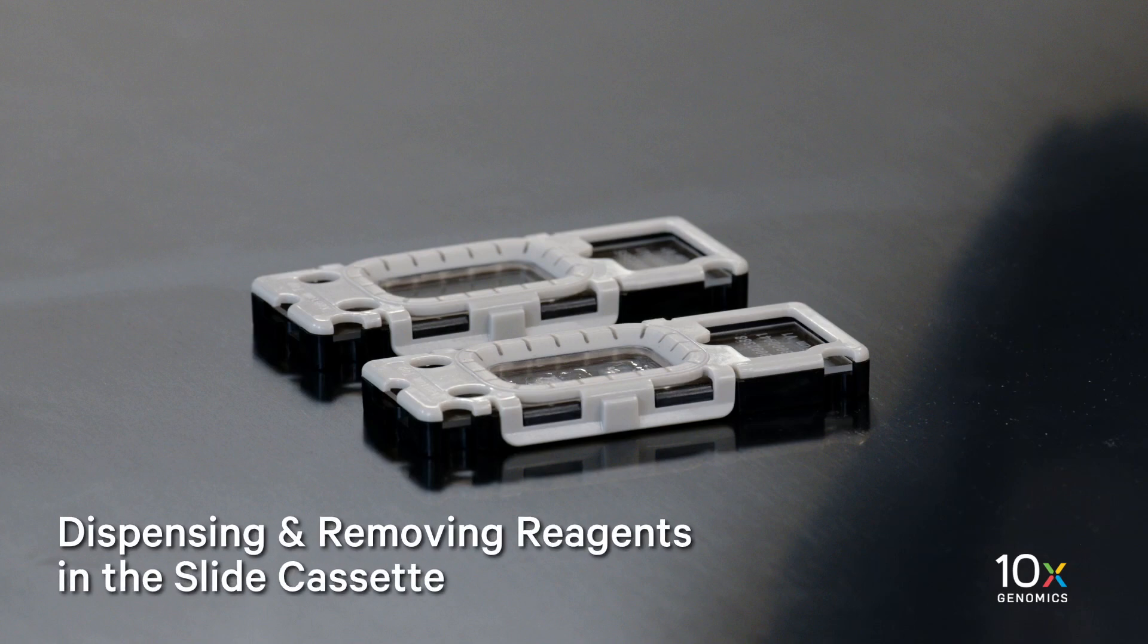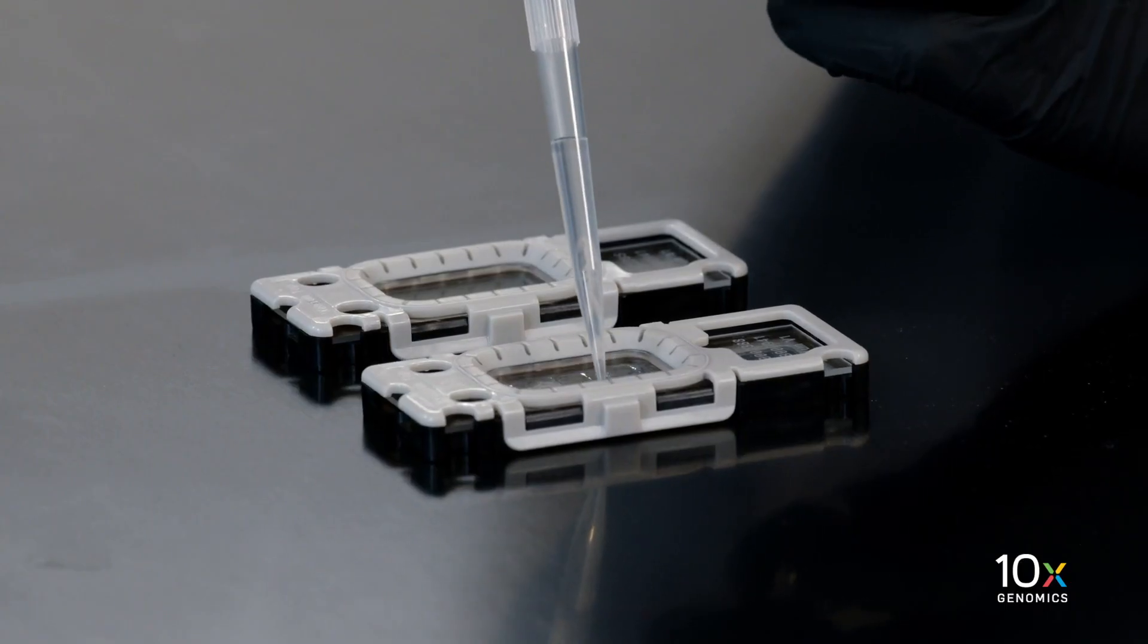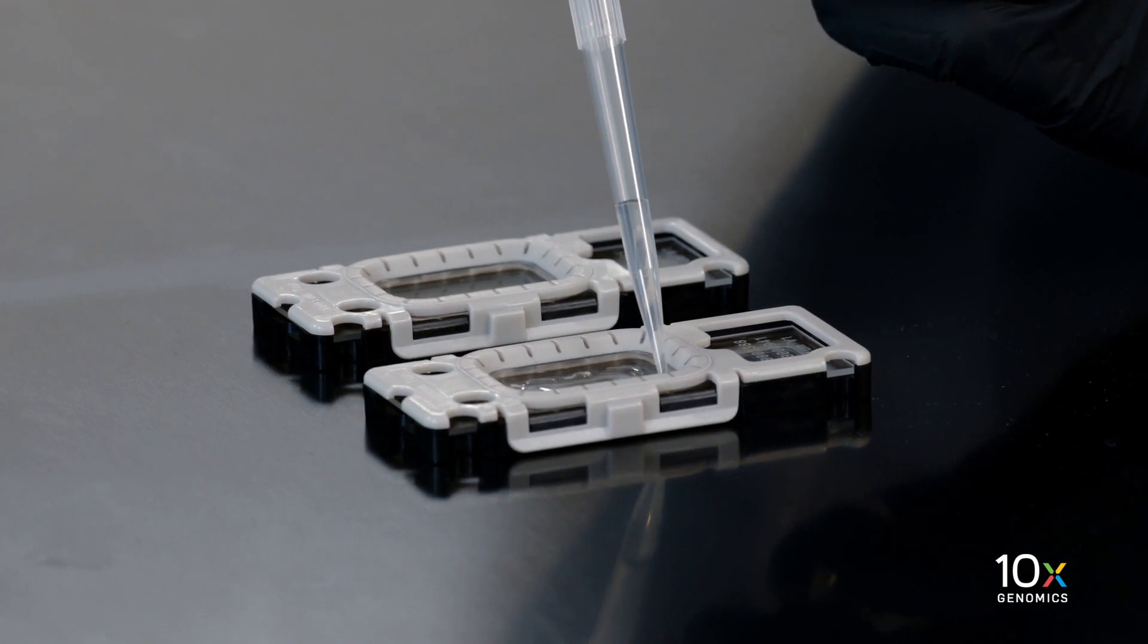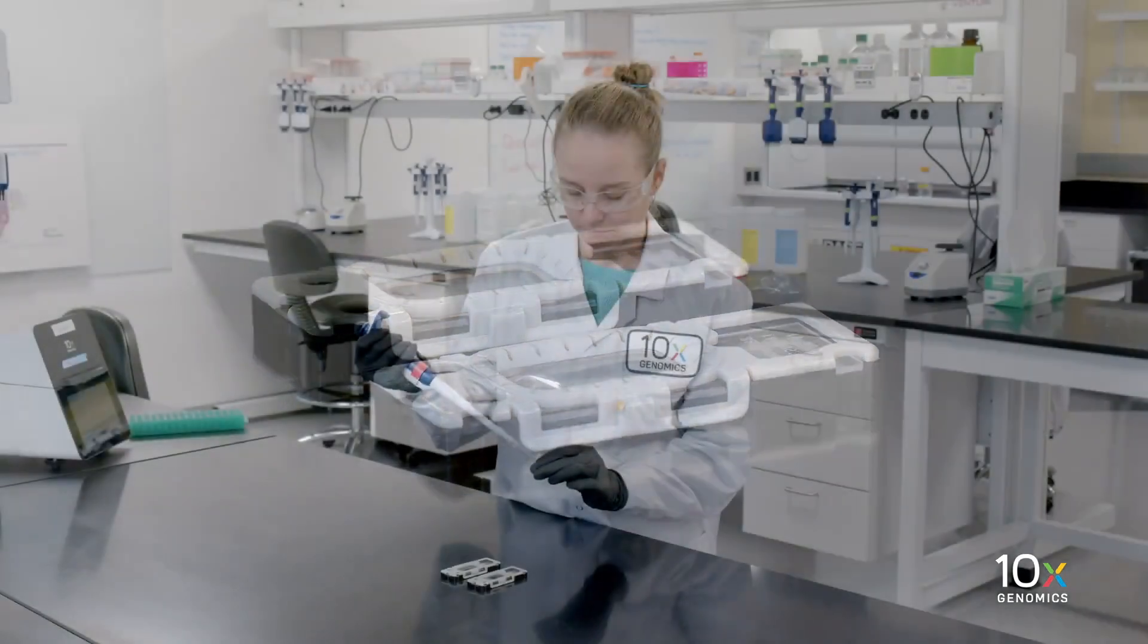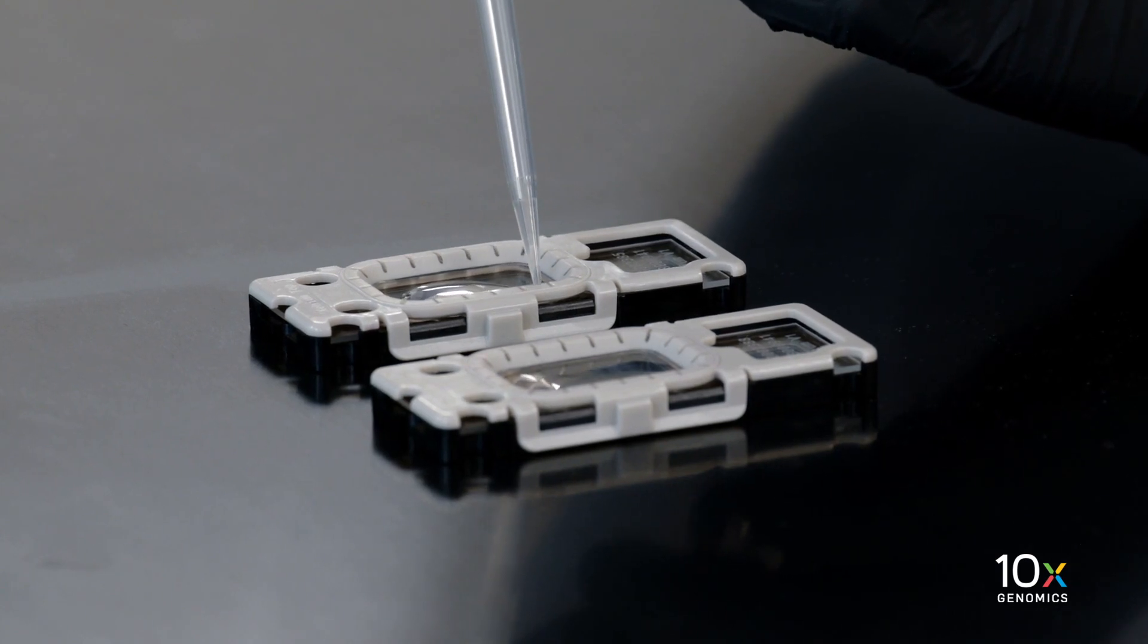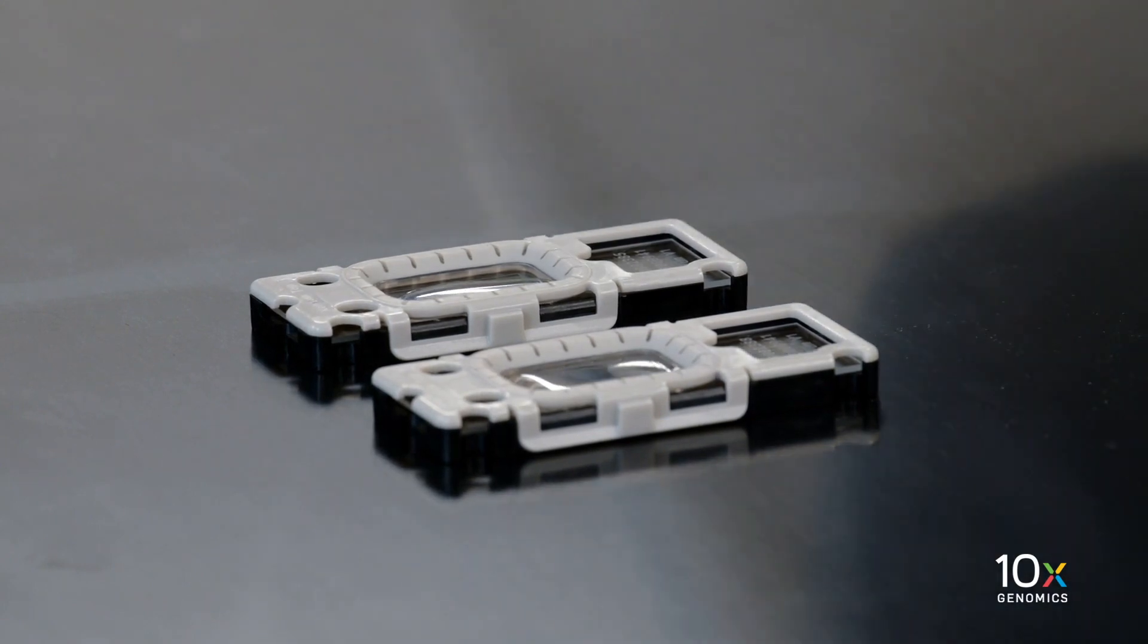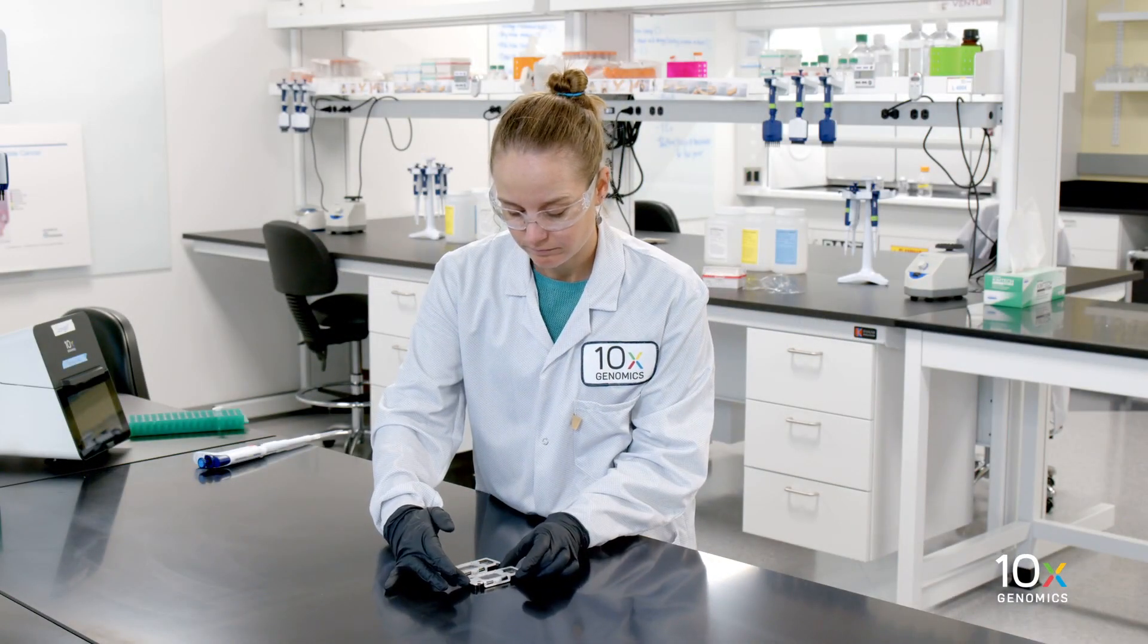Next, we will demonstrate dispensing and removing reagents in the slide cassette. After the slide cassette is assembled, we can dispense reagents into the well. Dispense and remove reagents along the side of the well without touching the slide surface, tissue sections when applicable and without introducing bubbles. Always cover the sample area completely when adding reagents to the well. A gentle tap may help spread the reagent more evenly.